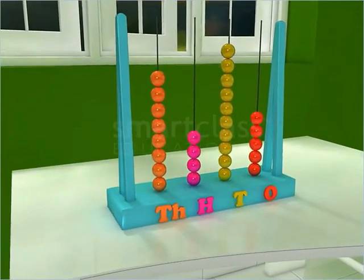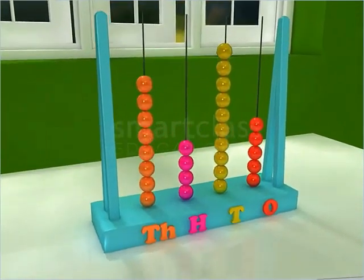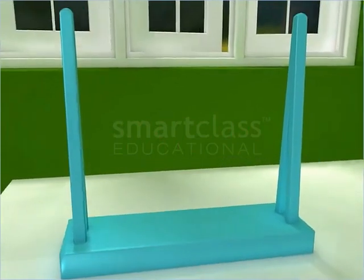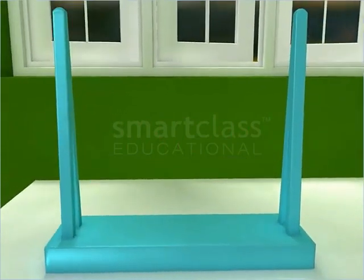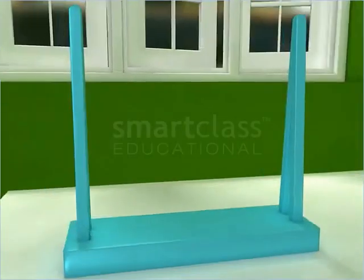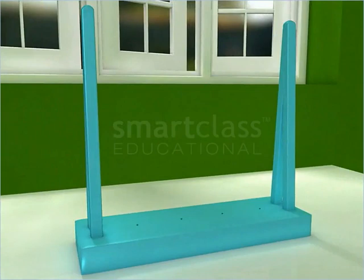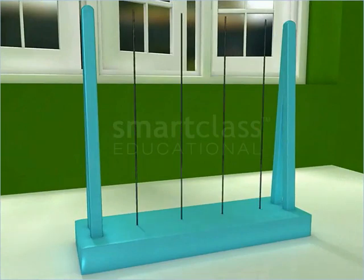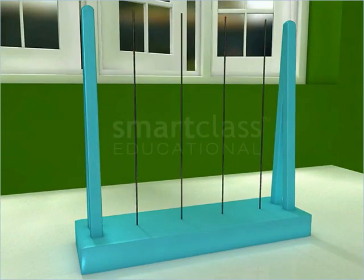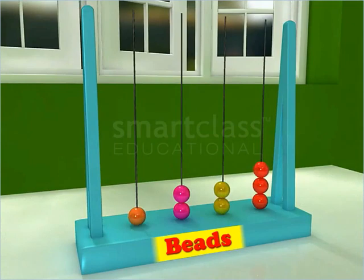Abacus is a tool used to read and count numbers. It is made up of a wooden frame. This frame has wires with beads in them. The beads can be moved along the wires easily.